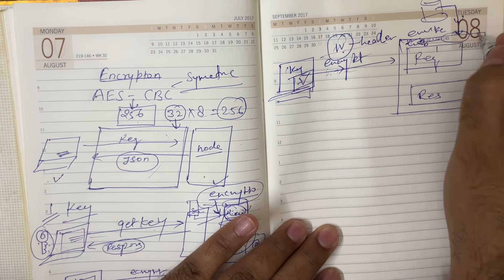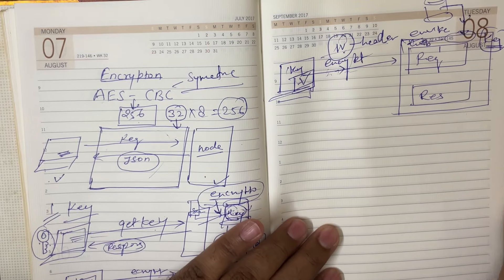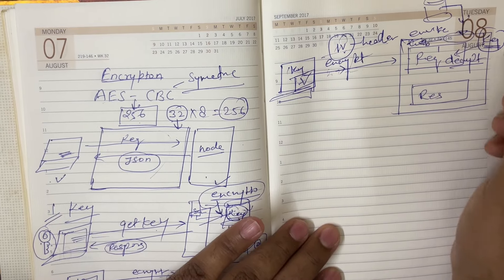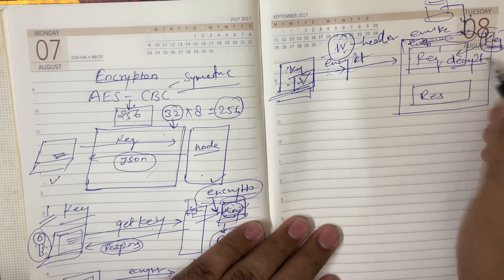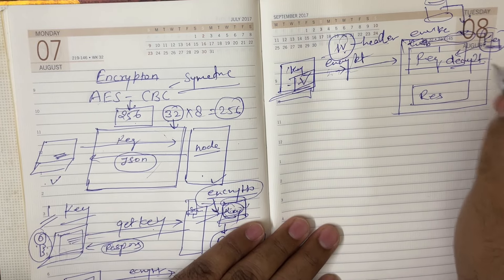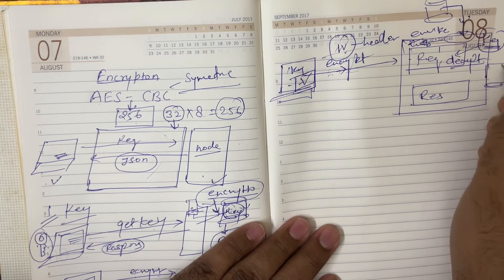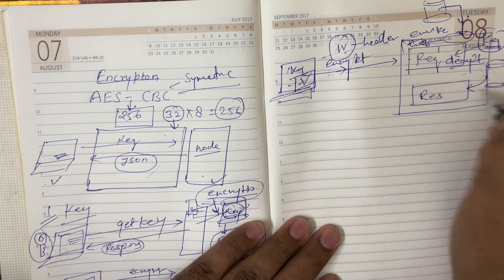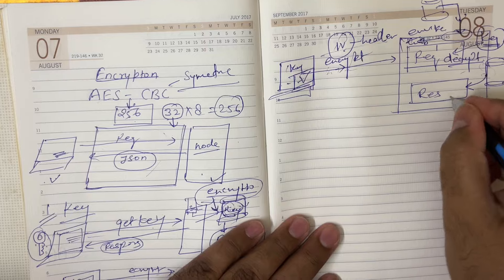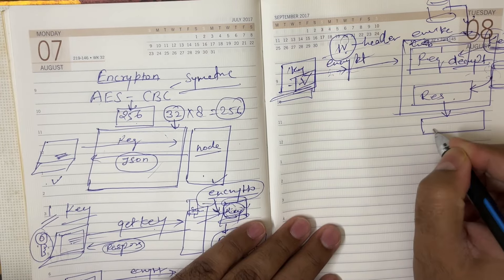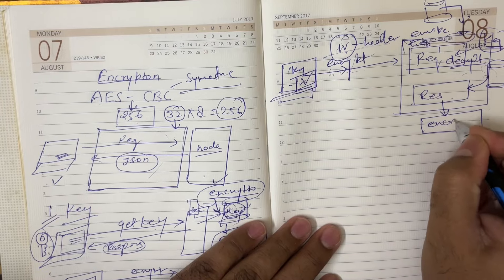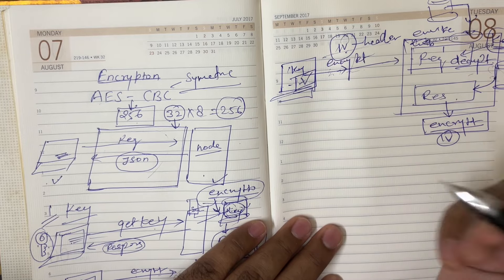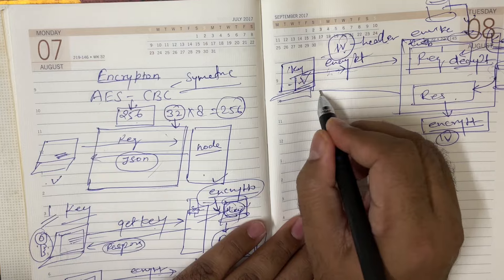The actual key is stored as a global variable. When a request comes in, we decrypt it and get the actual payload from the client. For the response, when the controller calls response.send, it comes to our middleware, which intercepts and modifies it — encrypts the response and generates the final output — before sending it.